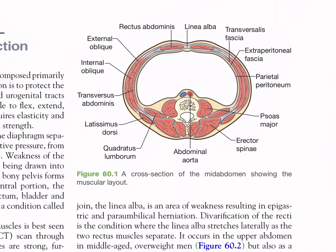Anteriorly we have the rectus abdominis and linea alba. From inside to outside we see: parietal peritoneum, transversalis fascia, transversus abdominis muscle, internal oblique muscle, and finally external oblique muscle. In the posterior part, in front of the vertebra, there is the abdominal aorta, then paraspinal muscles including quadratus lumborum, erector spinae, psoas major, and latissimus dorsi.